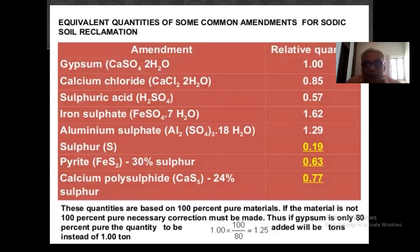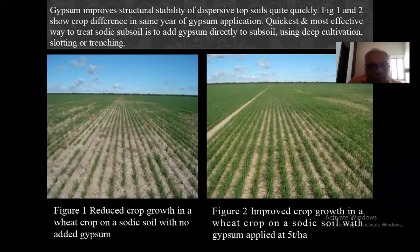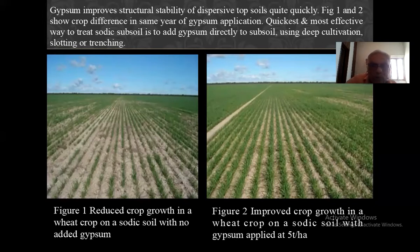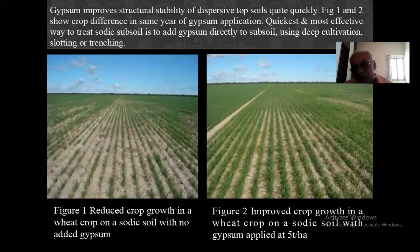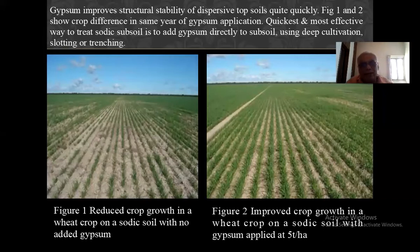Generally two to three tons of gypsum is required, but it depends upon the sodium or salt present in the soil. Here you can see a wheat crop — gypsum is not applied on the left side, but on the right side gypsum was applied at 5 tonnes per hectare. You can see improved crop growth in wheat on sodic soil with gypsum applied. Gypsum application depends on the sodicity of the soil. There is a clear-cut difference: the growth of wheat on the right side is better compared to the left side.